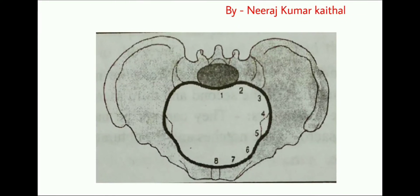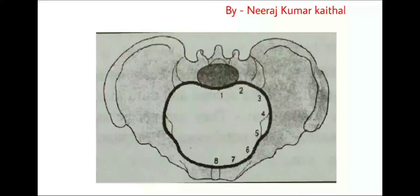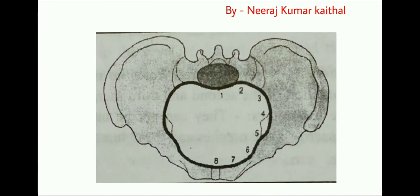Now repeating the landmark names — you can see them clearly in the diagram. First is sacral promontory. Second, sacral ala or wing. Third, sacroiliac articulation. Fourth is ileopectineal line. Fifth is ileopectineal eminence. Sixth is pubic tubercle. Seventh is pubic crest. Eighth is upper inner border of symphysis pubis.